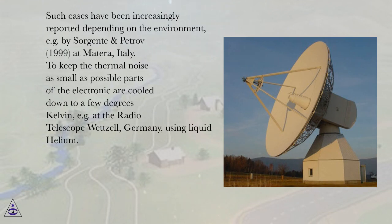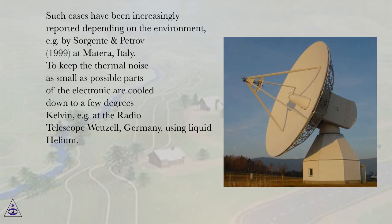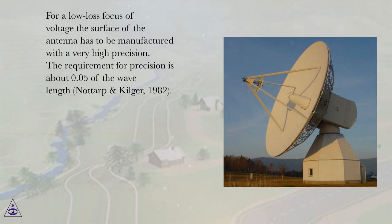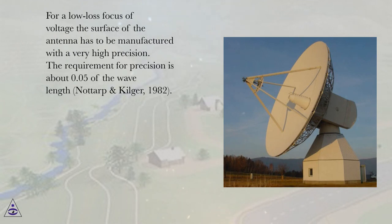To keep the thermal noise as small as possible, parts of the electronics are cooled down to a few degrees Kelvin — for example at the radio telescope Wetzel, Germany, using liquid helium. For a low-loss focus of voltage, the surface of the antenna has to be manufactured with very high precision. The requirement for precision is about 0.05 of the wavelength (Notarp and Kielga, 1982).